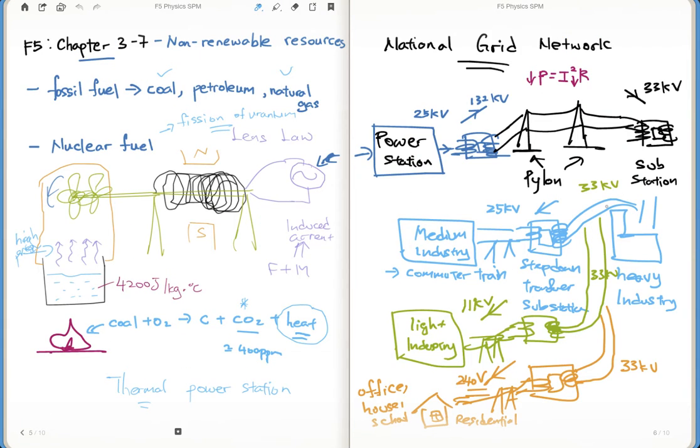Why do you step it up, then later step it down, and then step it down further to 25 and then 11 and then to 240?